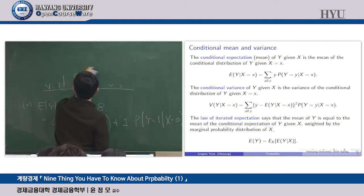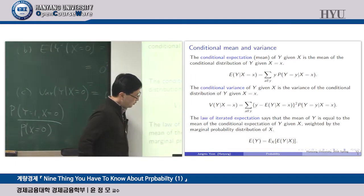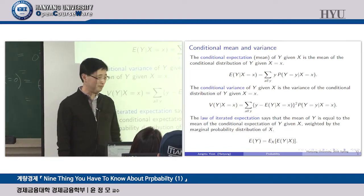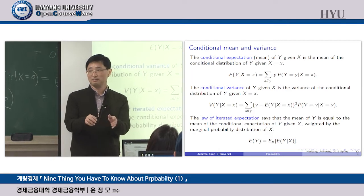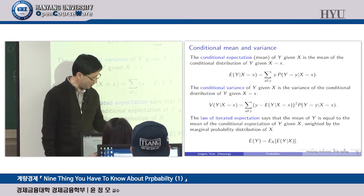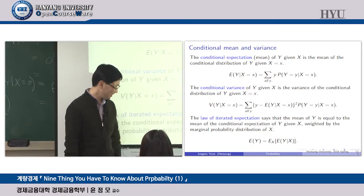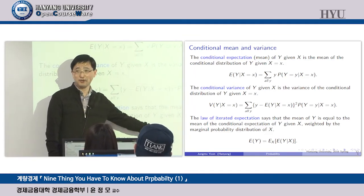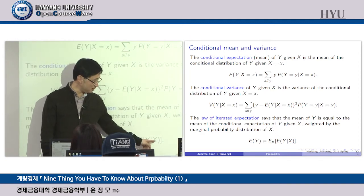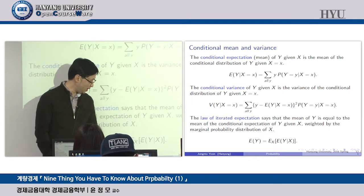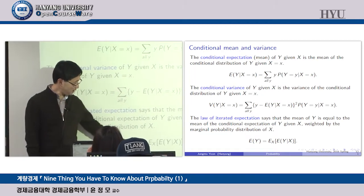Basically it says there are two ways to get the mean of a random variable Y. The first way is you just take the mean — you type mean(Y) in R. The harder way is you get the conditional mean; there may be several conditional means depending on the value of X. If X takes 0 and 1, there are two conditional means: mean of Y when X equals 0, and mean of Y when X equals 1. Then you take the weighted average using the distribution of X. This law says they are always the same.